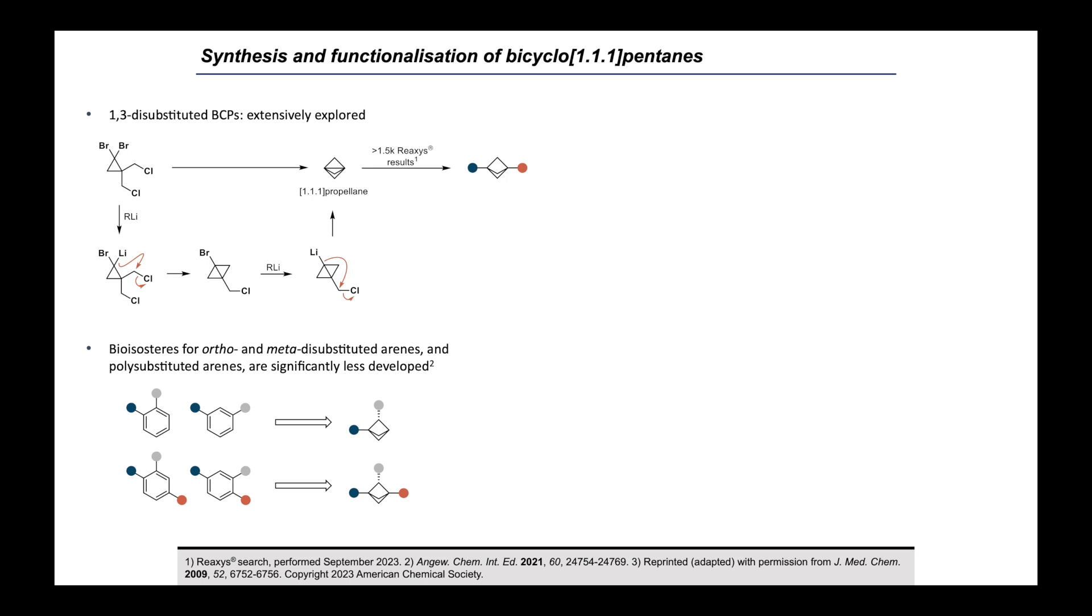But now let's consider possible bioisosteres for ortho- or meta-substituted arenes. Well this is more challenging, since we now need to consider functionalization of the bridge positions of the BCP, and it turns out that the synthetic toolkit of reactions that we have to access these motifs is very much more limited. This is a problem for two reasons. First of all, it means we don't have access to this chemical space, and we're unable to explore these interesting vectors.